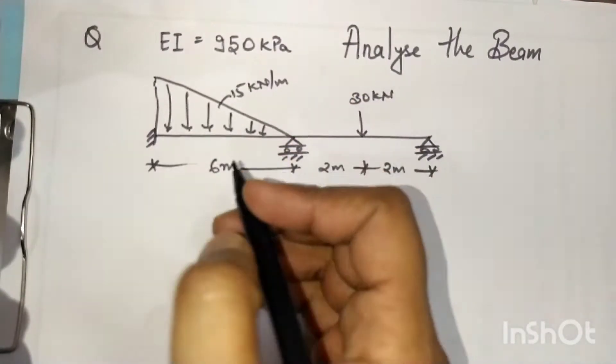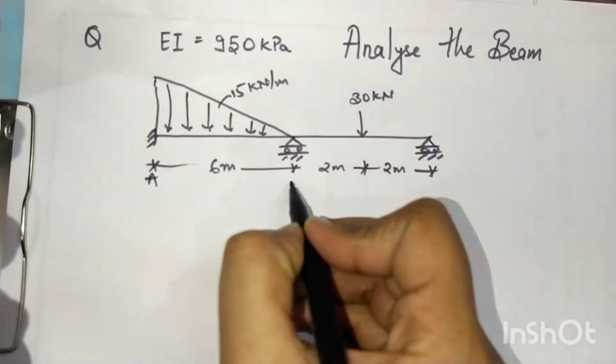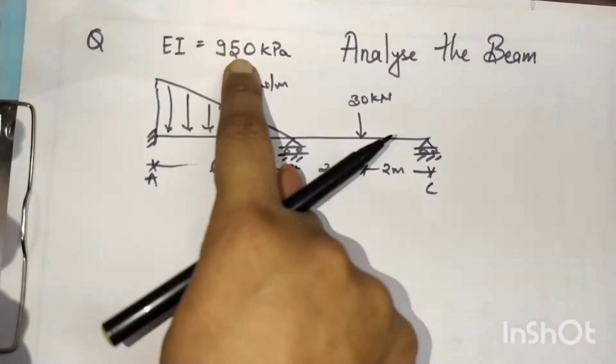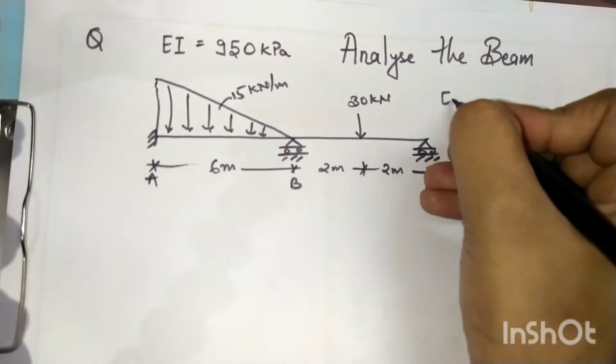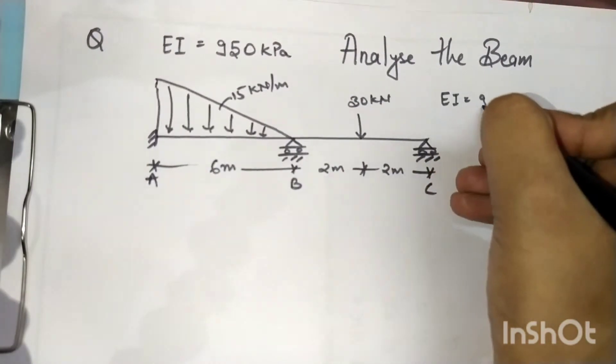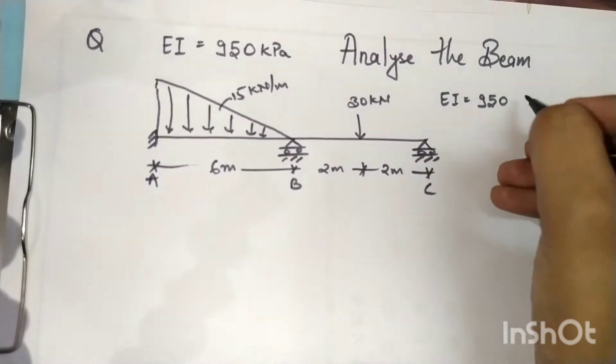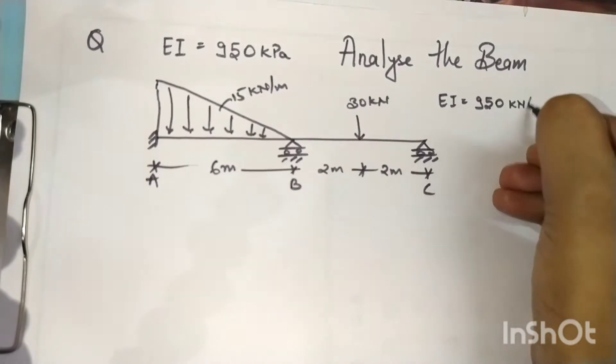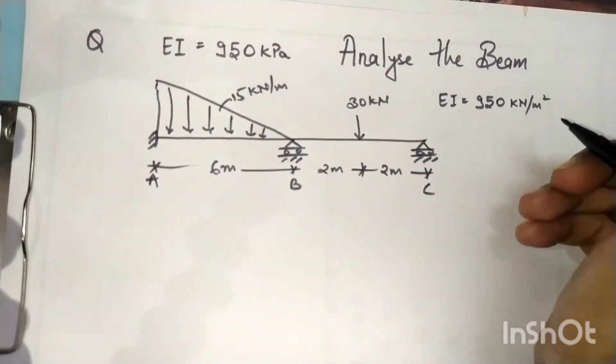Welcome. In this question we have to analyze the beam using slope deflection method. EI is given as 915 kPa, which is equal to 950 kilonewton per meter square. In this question, your B support is sinking down by 20 mm.